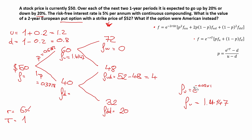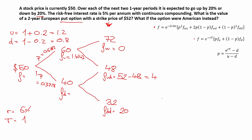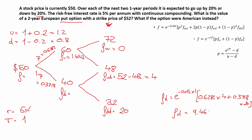Now we find fd using the same formula: fd = e^(−0.05×1) × (0.6282 × 4 + 0.3718 × 20). Plugging this into the calculator gives fd = 9.4636.